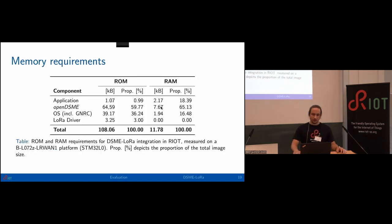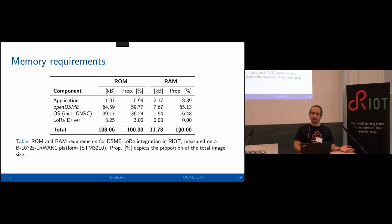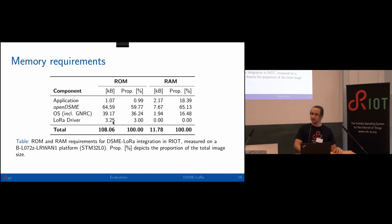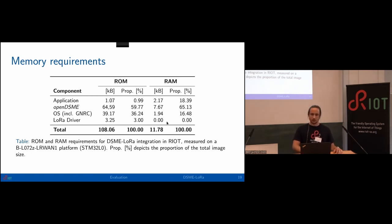First, the memory requirements. We evaluate this on the B-L072Z LoRa 1.1 platform — the same used in the tutorial this morning — essentially an STM32L0 with 256 KB of ROM and 20 KB of RAM. Total consumption is around 108 KB of ROM and 12 KB of RAM for basic support with the GNRC interface. About 60% of the ROM and 65% of the RAM is OpenDSME. For the LoRa driver, since the new interface maps directly to the semantics of a 15.4 device, the mapping is almost one-to-one and no extra state is needed, keeping the LoRa driver very slim.